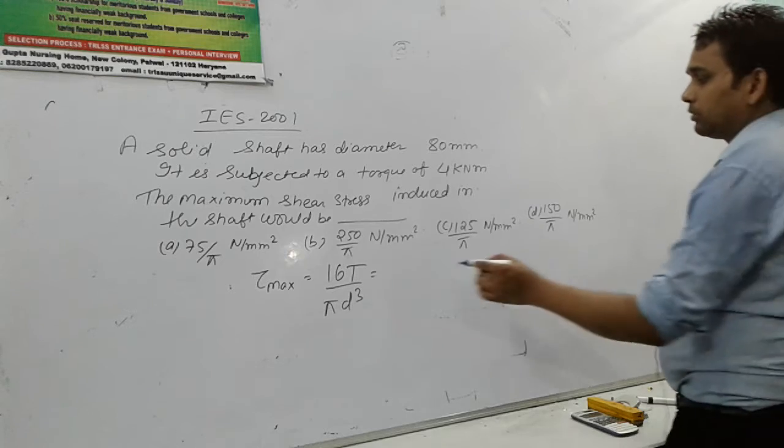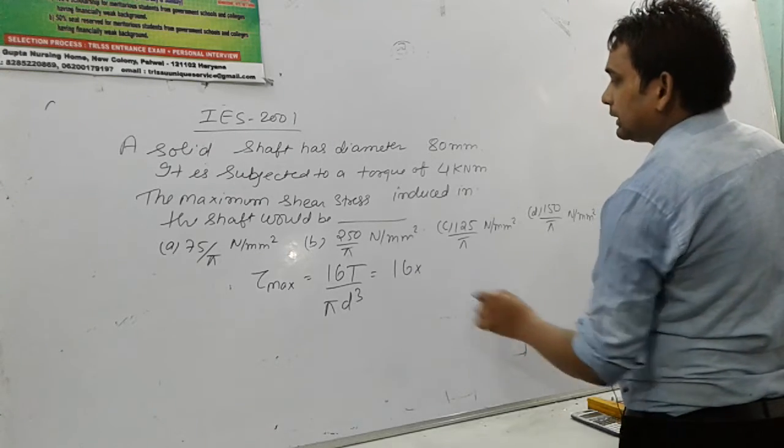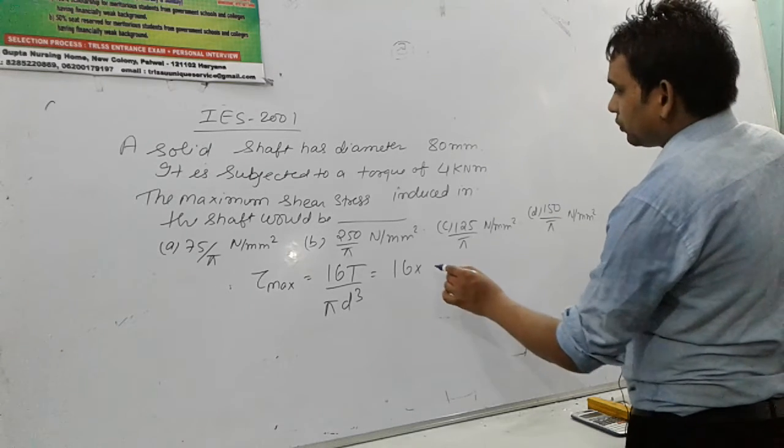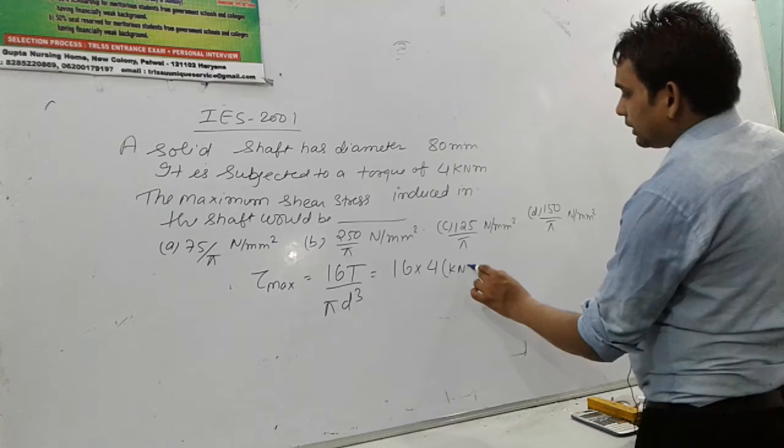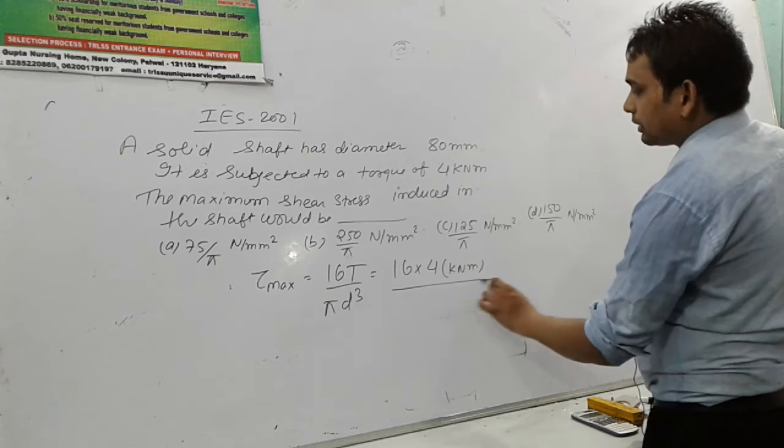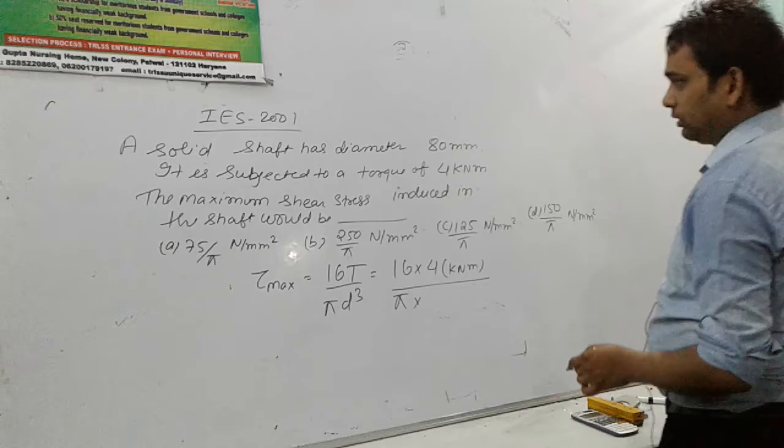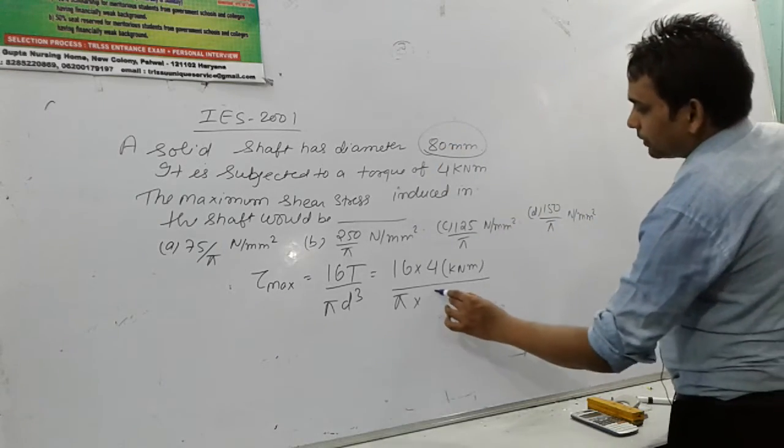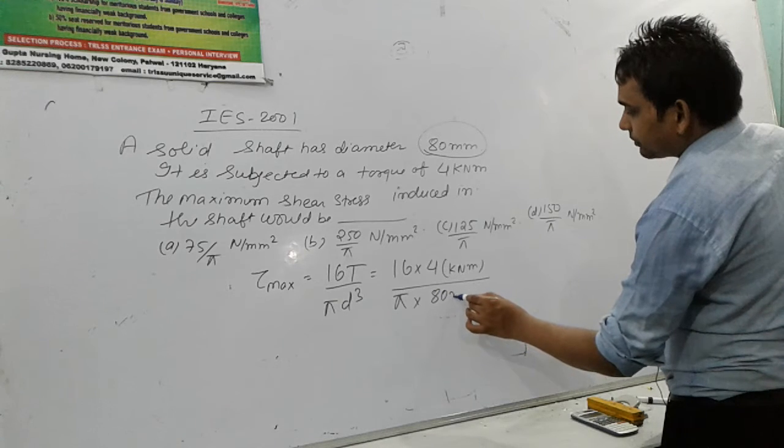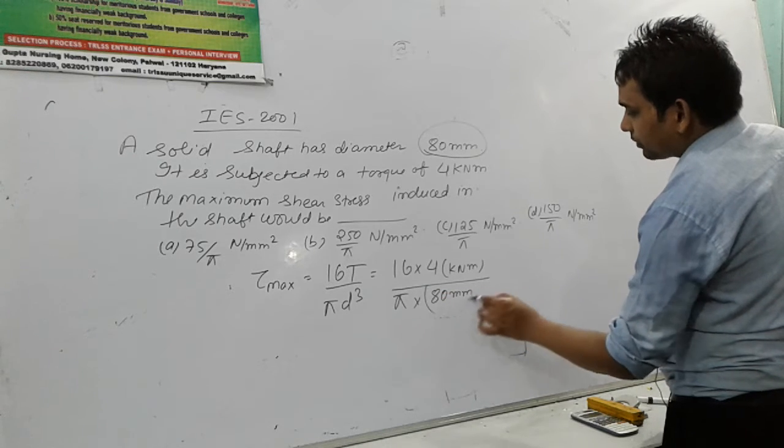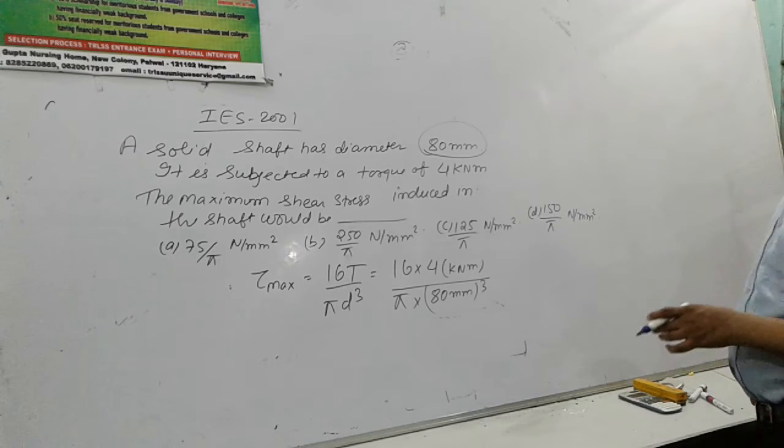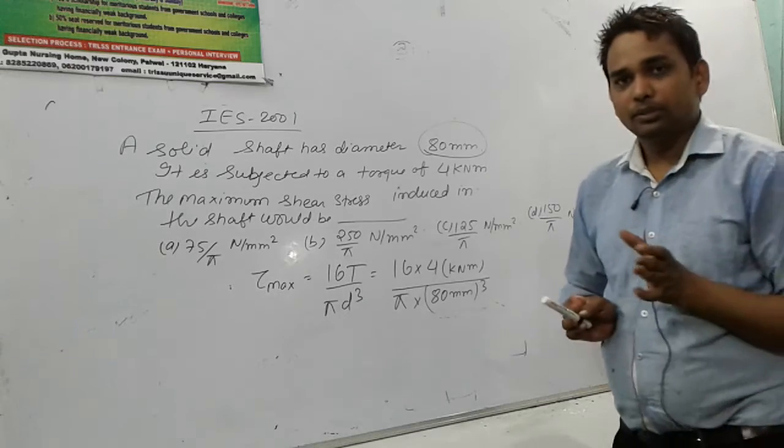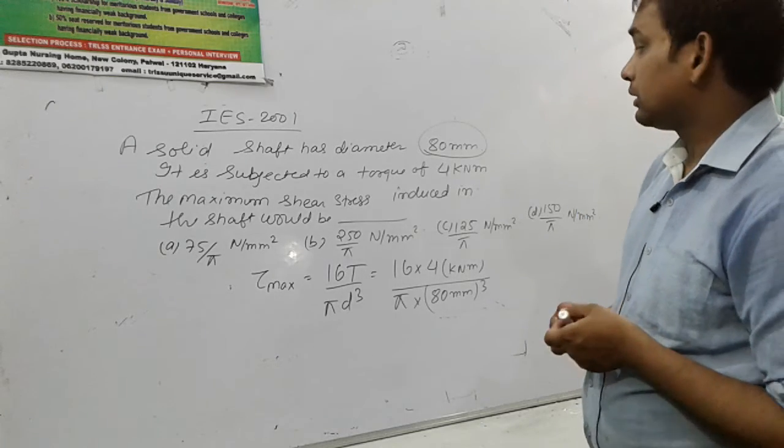16T, the value of the torque is already given. It means π and the value of the diameter of the solid circular shaft is 80 mm. So we will write here 80 mm. Unit is very important. In solving the question, we should consider the units.